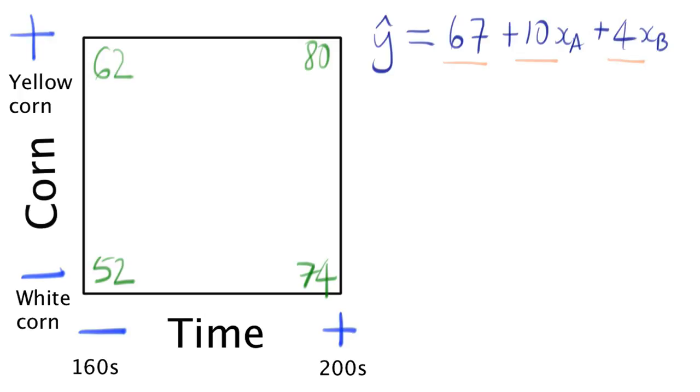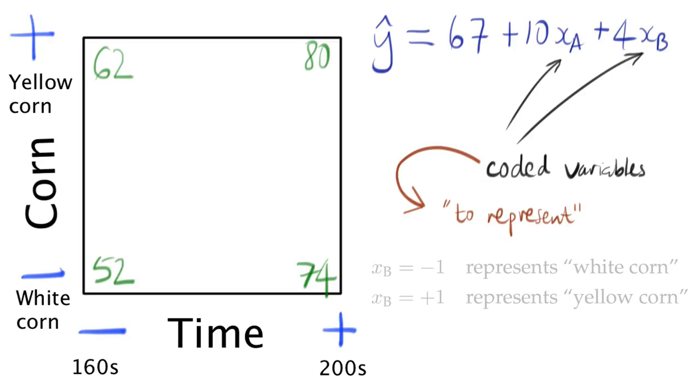Now I know I haven't really spoken about what this xa and xb are. These are variables. Specifically, we call them coded variables. And in this area of work, the word code means to represent. So for example, in variable xb, we let minus 1 represent white corn, and we let plus 1 represent yellow corn.